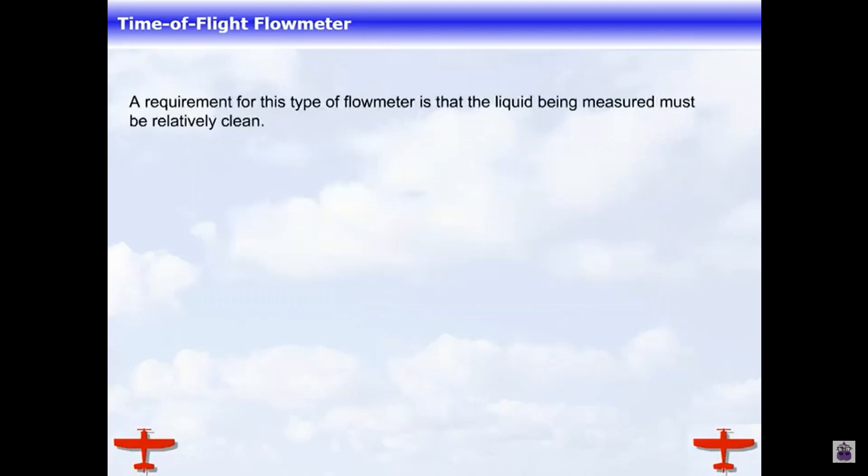A requirement for this type of flow meter is that the liquid being measured must be relatively low turbidity. Particles in the fluid may absorb or scatter the ultrasonic waves and make the reading inaccurate.